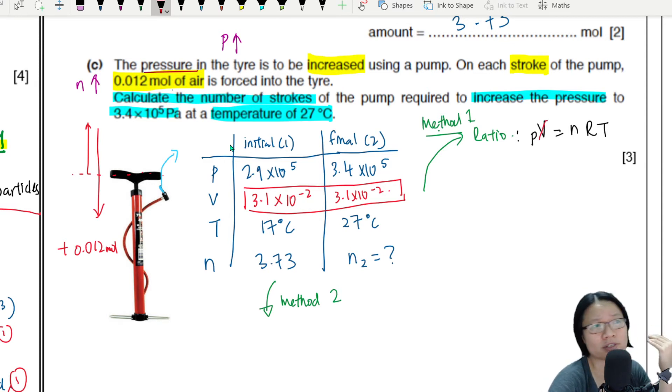So volume is constant, universal gas is constant, and since I want to find n, maybe I isolate n first. n will be equal to PV over RT.